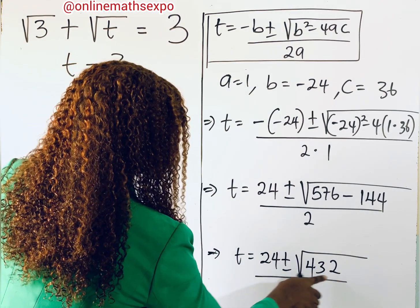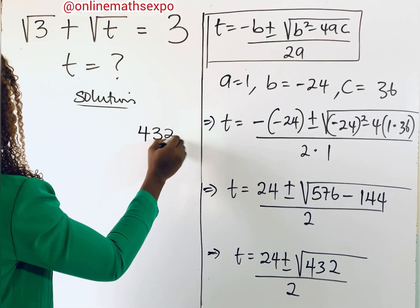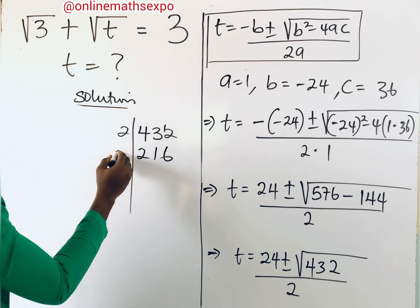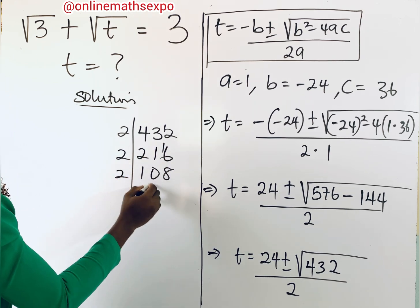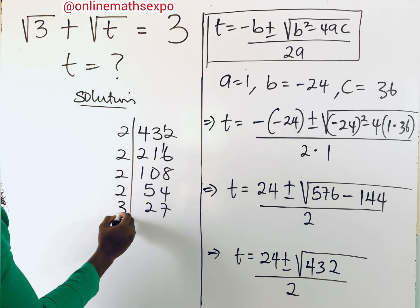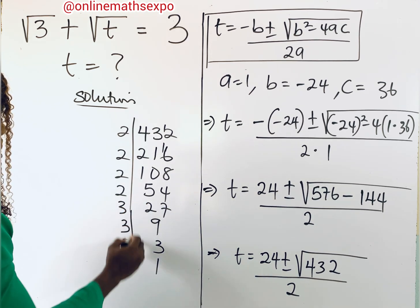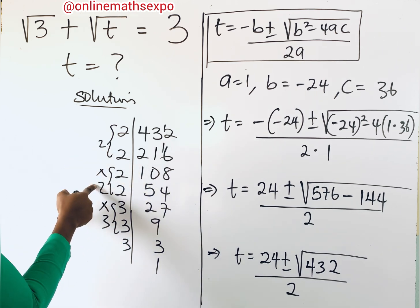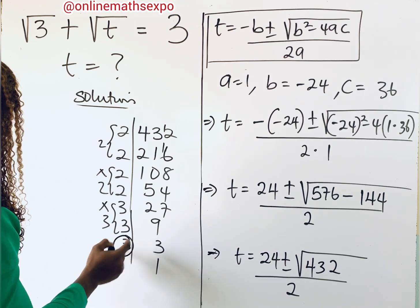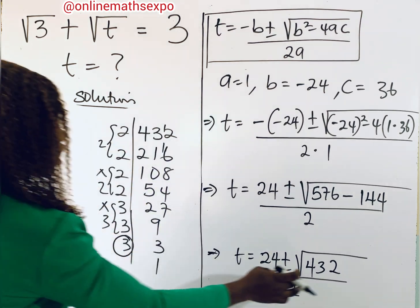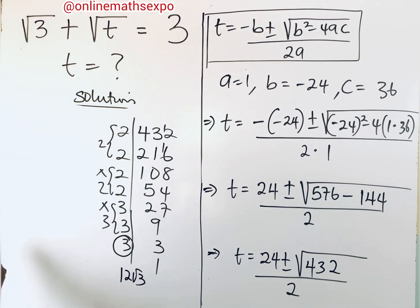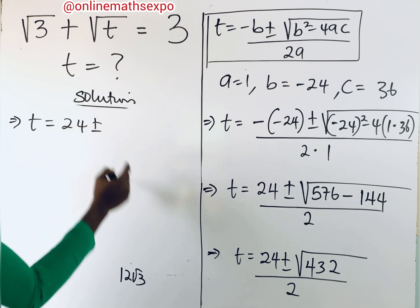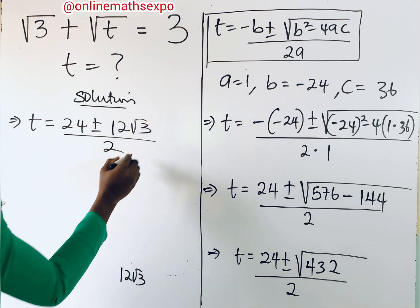To find the square root of 432 without a calculator, we factor: 432 = 2 × 216 = 2 × 2 × 108 = 4 × 108 = 4 × 4 × 27 = 16 × 27. Pairing the prime factors gives us 4 × 3√3, so √432 = 12√3. Therefore t = (24 ± 12√3) / 2.